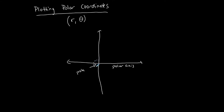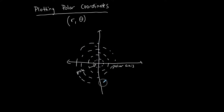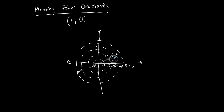When we graph on a polar coordinate system, we get concentric circles, instead of the boxes you get on rectangular graph paper. We move out from the pole — 1, 2, 3, 4 — so r is the distance from the pole, and theta is the angle from the polar axis.